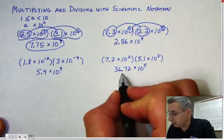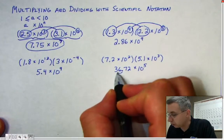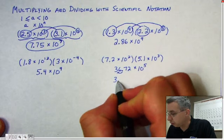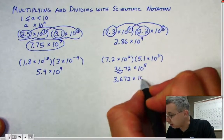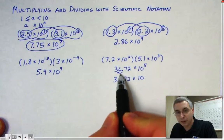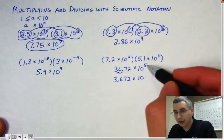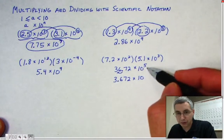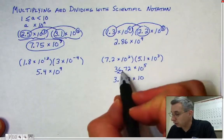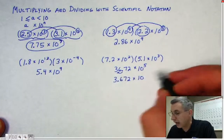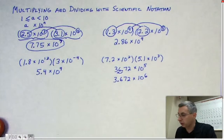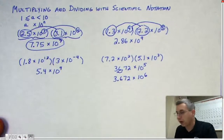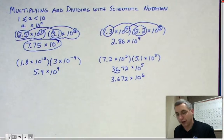You need to fix it by taking this decimal and moving it over once. So this becomes 3.672 times 10. But now that you've moved it once, you need to adjust your exponent — it can't be 5 anymore. If you have to move it once to adjust, you add 1 to the exponent. So instead of 5, this is now 6: 3.672 times 10 to the sixth, which is correct scientific notation and that is your answer.